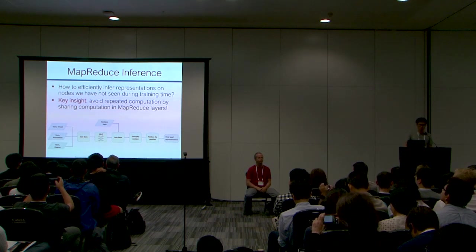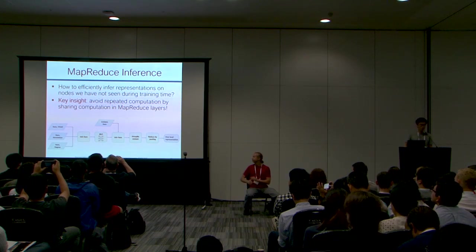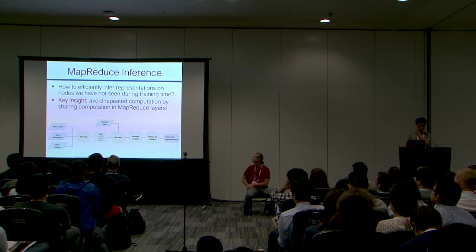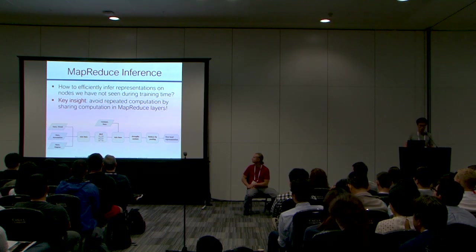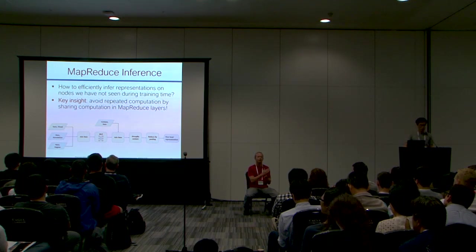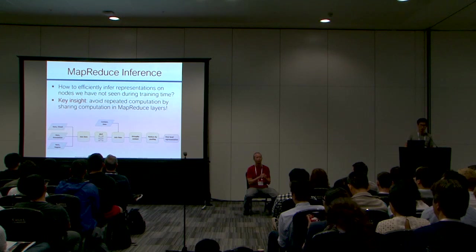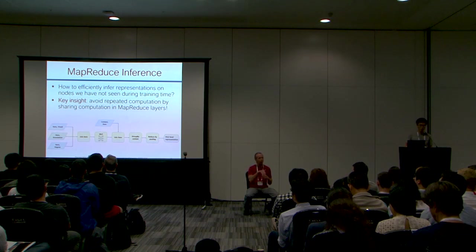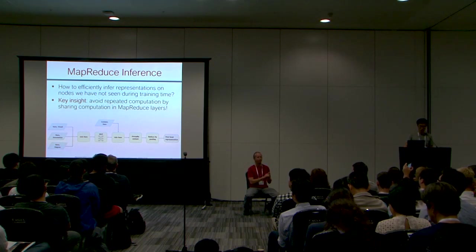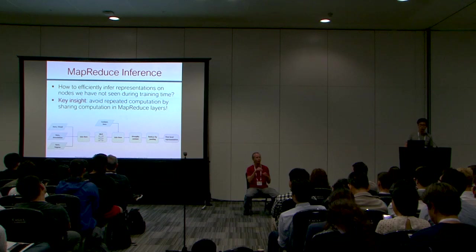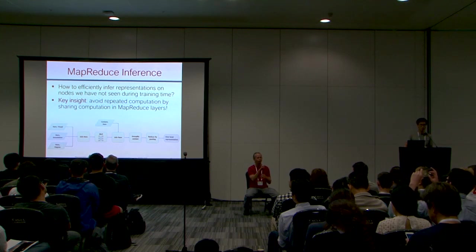To efficiently generate embeddings for all pins at inference time, we use MapReduce. During mini-batch training there is a lot of repeated computation because neighborhoods overlap and node representations are computed multiple times. Instead, at inference we perform layer-wise MapReduce computation: we first compute the first-layer representations for all nodes, then based on those compute the second-layer representations for all nodes, avoiding redundant work.